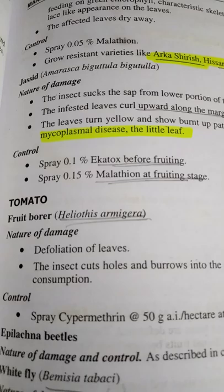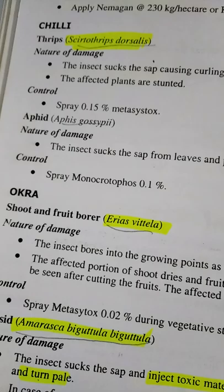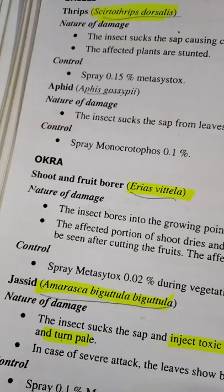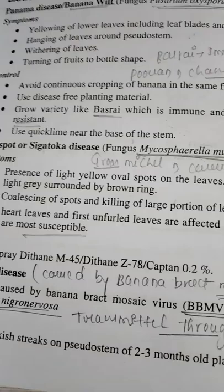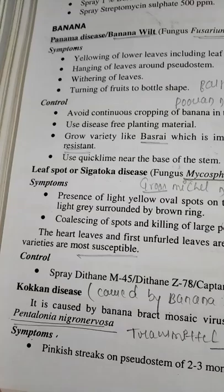For brinjal pests — very important: shoot and fruit borer is Leucinodes orbonalis. Epilachna beetle is Epilachna vigintioctopunctata, also called Hadda beetle. Jassid is Amrasca biguttula biguttula. Tomato fruit borer is Helicoverpa armigera (old name Heliothis). Whitefly is Bemisia tabaci. Chilli thrips is Scirtothrips dorsalis. Okra shoot and fruit borer is Erias vitella. Jassid of Okra is Amrasca biguttula biguttula.